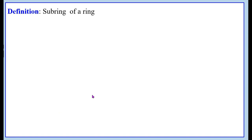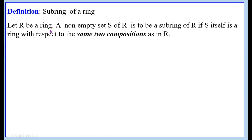Sub-ring of a ring. Let R be a ring. A non-empty set S of R is said to be a sub-ring of R if S itself is a ring with respect to the same two compositions as in R. The important point is that S must be a ring by itself with respect to the same binary operations as defined in R.